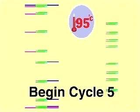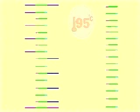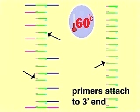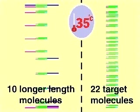In cycle five, the heating, annealing, and synthesis steps are repeated. By the end of cycle five, there are 22 target molecules and 10 longer ones.